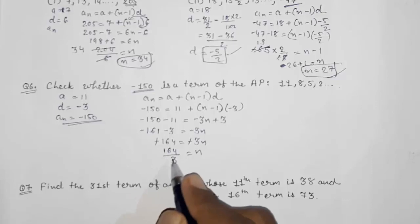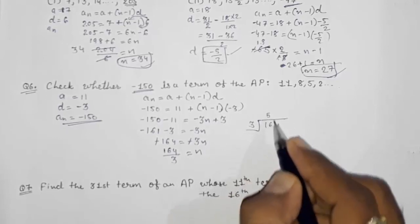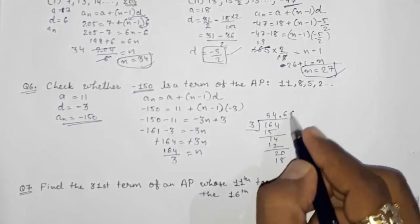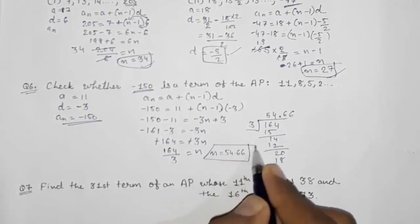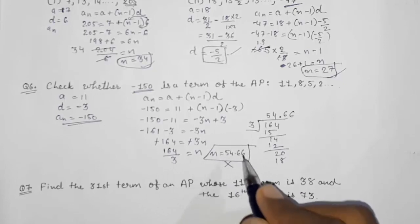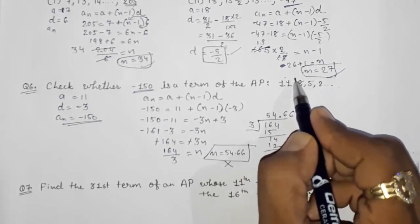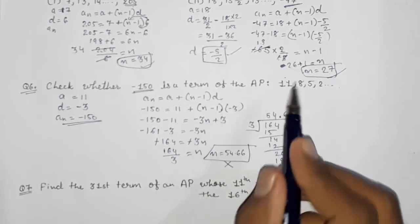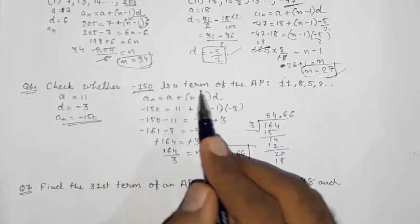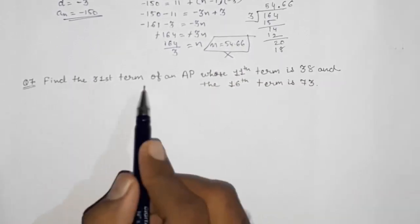164 ÷ 3 gives a decimal answer: 54.666..., so n is not a whole number. Since n cannot be 0, negative, or a decimal or fraction — because terms are counted as 1st, 2nd, 3rd, and you cannot have a 54.67th term — this means −150 is not a term of this AP.